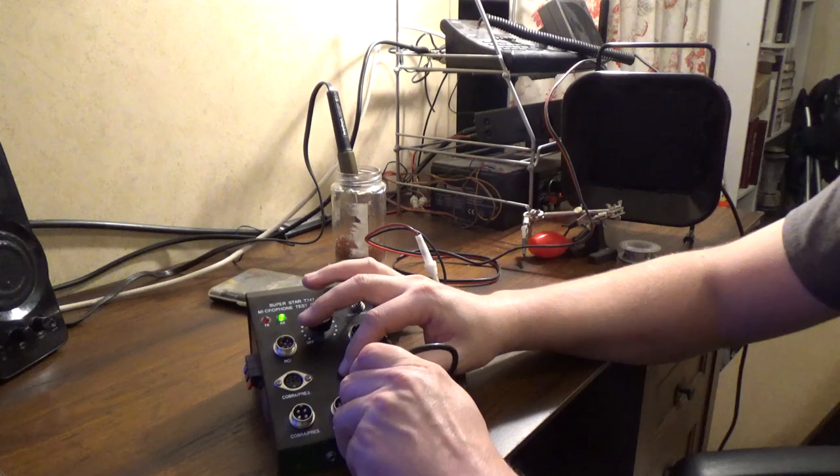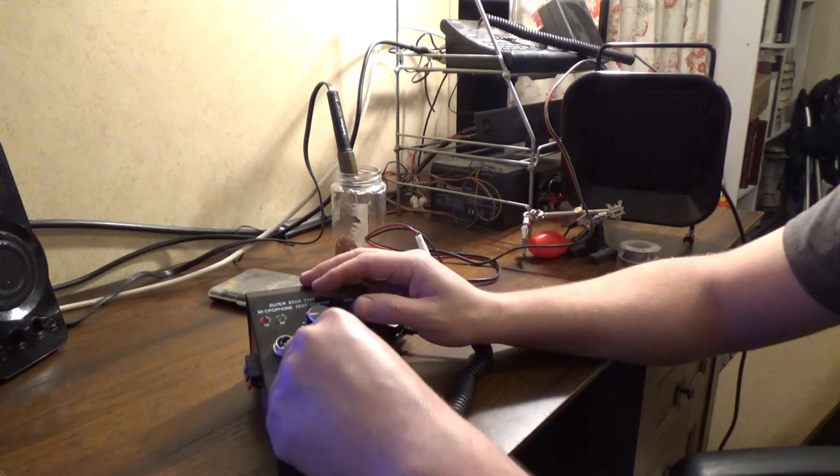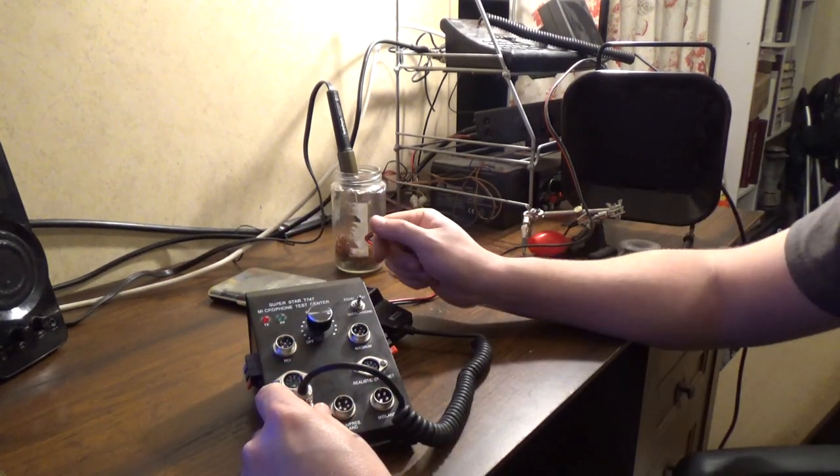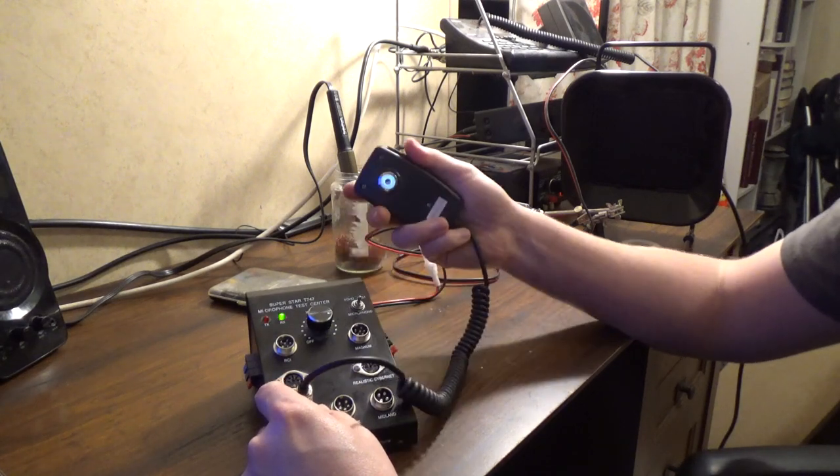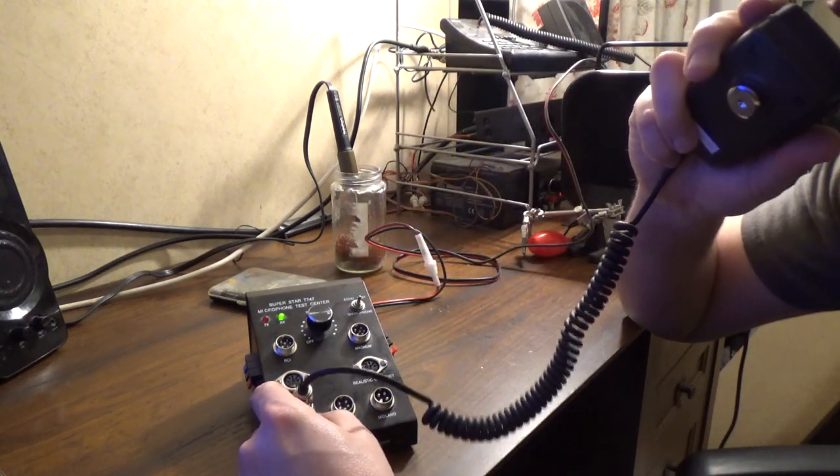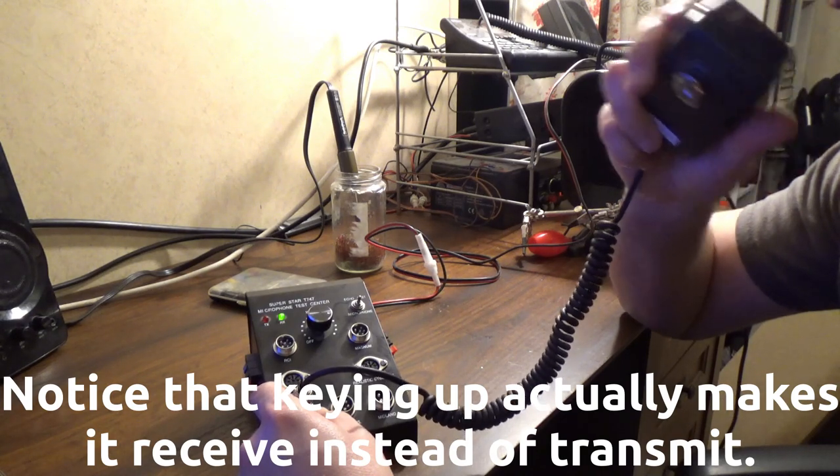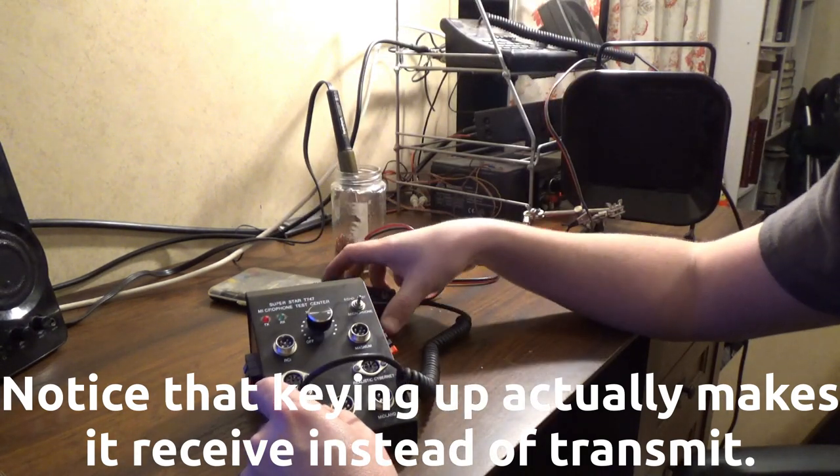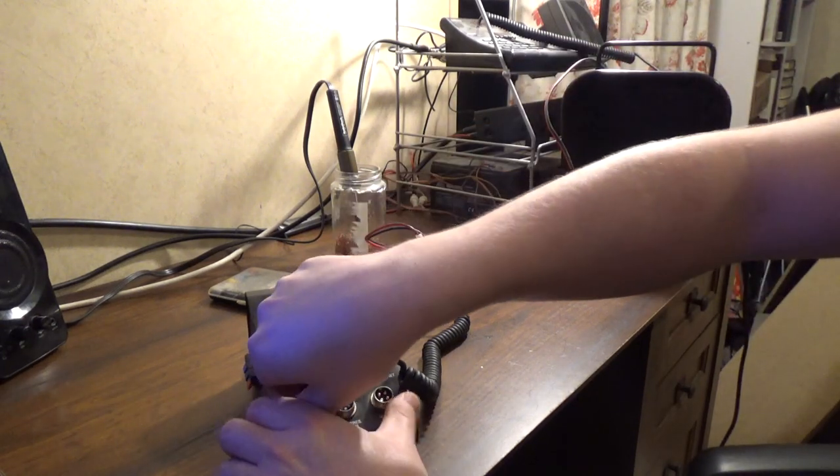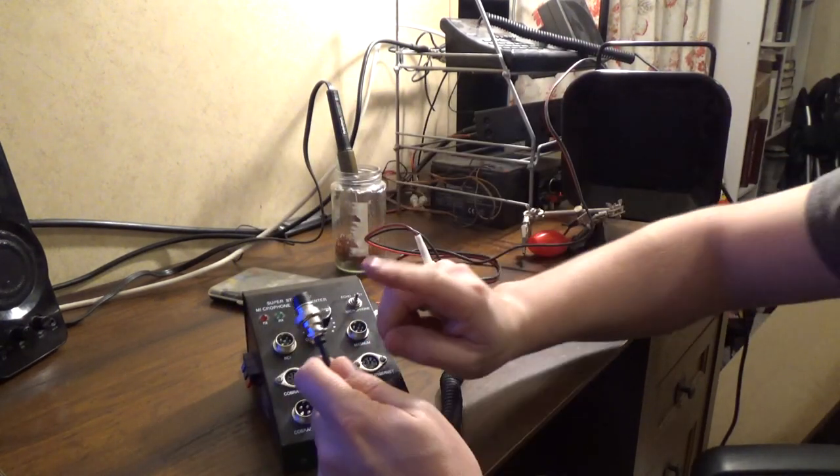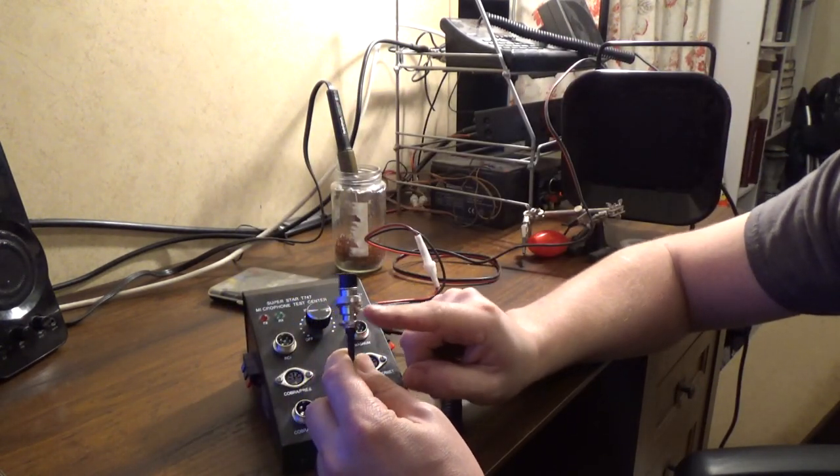We put it in 4-pin Cobra. And our TX light comes on, but it's weak and keying up. See, it's wired up sort of backwards. So we're going to go ahead and wire this guy up correctly for 4-pin Cobra.